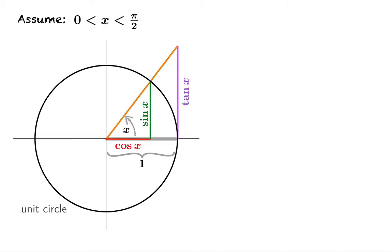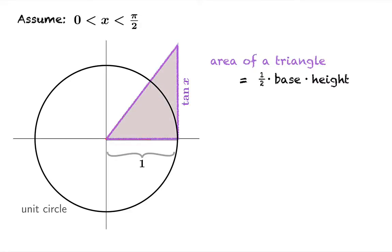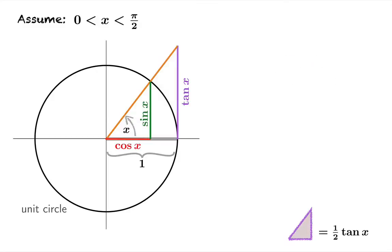So now we're going to calculate some areas. We're going to start with the area of this triangle right here. Half the base times the height in this case is just one half tan x. So let's put that result off to the side.